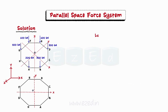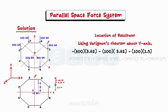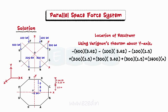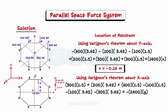Next, we will find the location of the resultant. Let the resultant act at a point I with coordinates (X, Y) as shown. The location of the resultant force is found using Varignon's theorem about two different axes perpendicular to the plane of the forces. Hence, we will apply Varignon's theorem along both the X and Y axes. We first solve about the Y axis. On substituting the values of the forces and their moment arms and further simplifying, we find X is equal to minus 0.16 meters. Similarly, on using Varignon's theorem about the X axis, we find Y is equal to minus 0.03 meters.